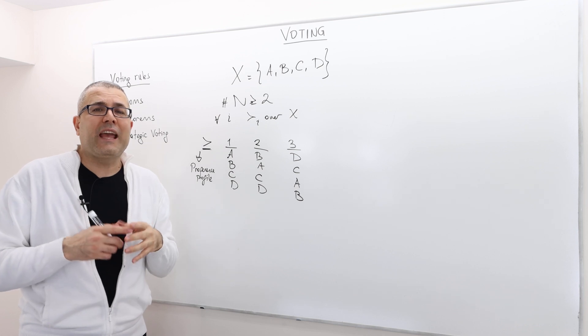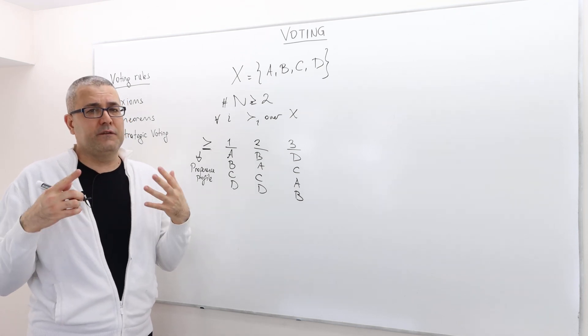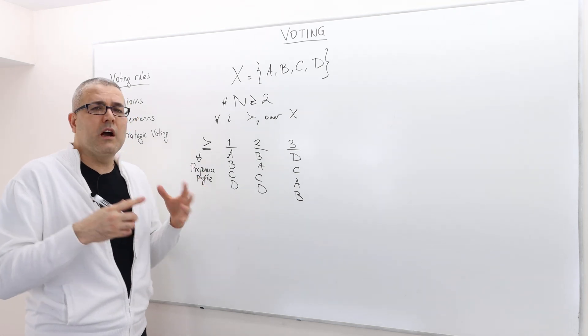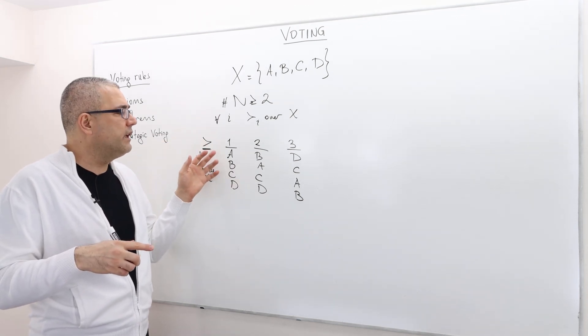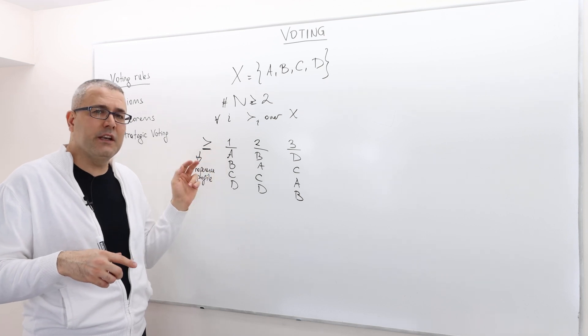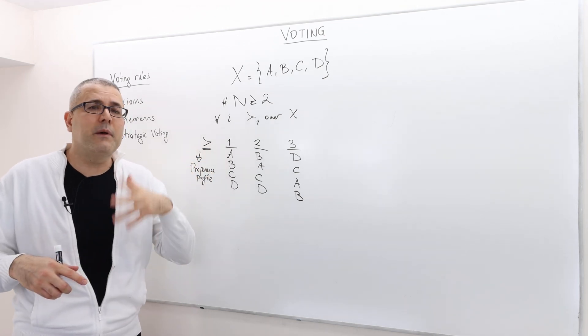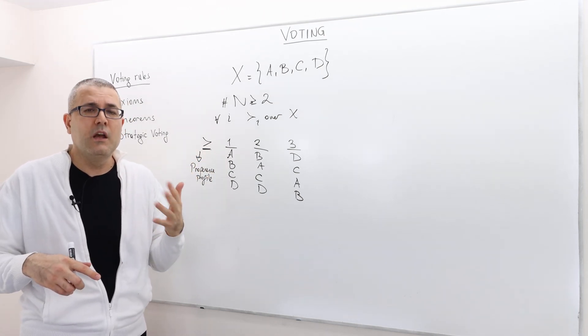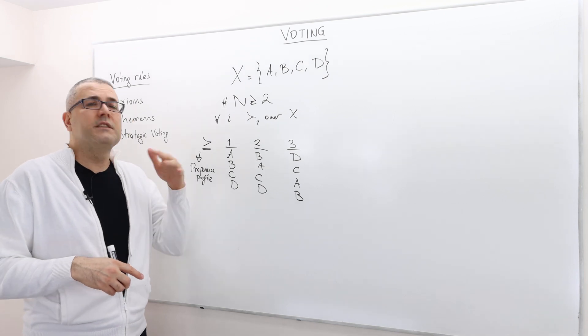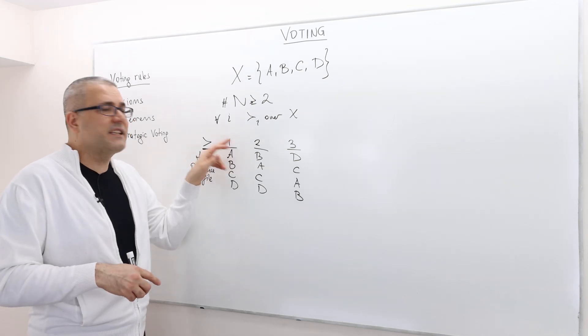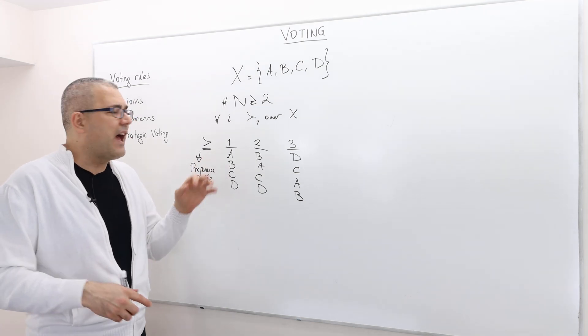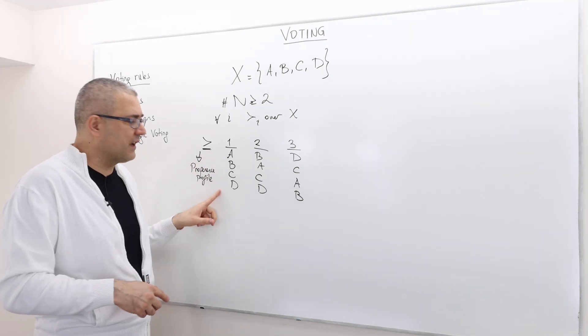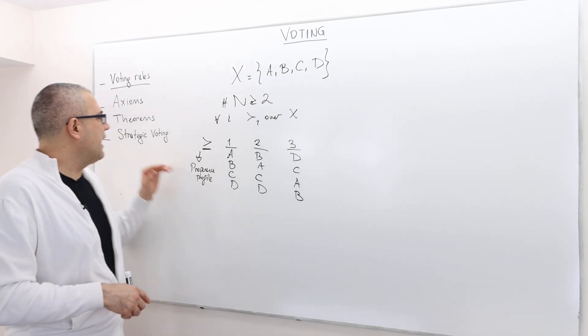We are going to look at voting rules where the rule not only cares about the best alternative, but also cares about the second best, third best, and so on. So suppose that we ask each agent, each voter, how they rank the alternatives, and they truthfully tell us their preferences.